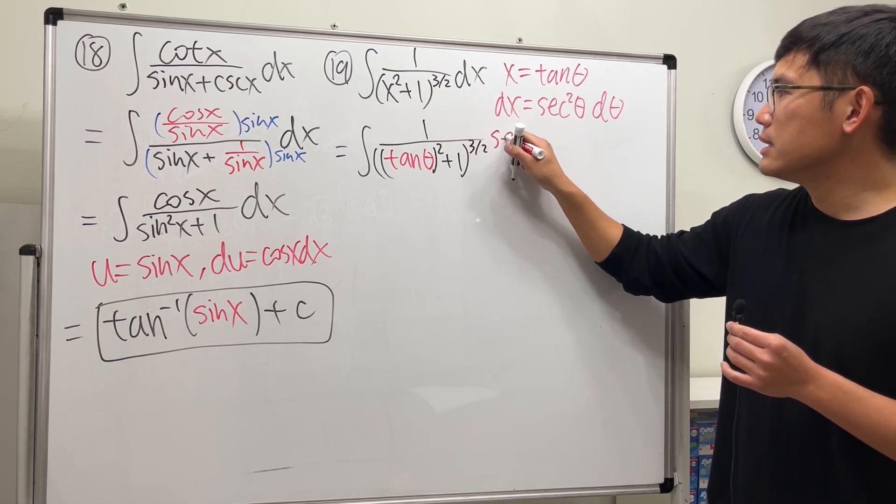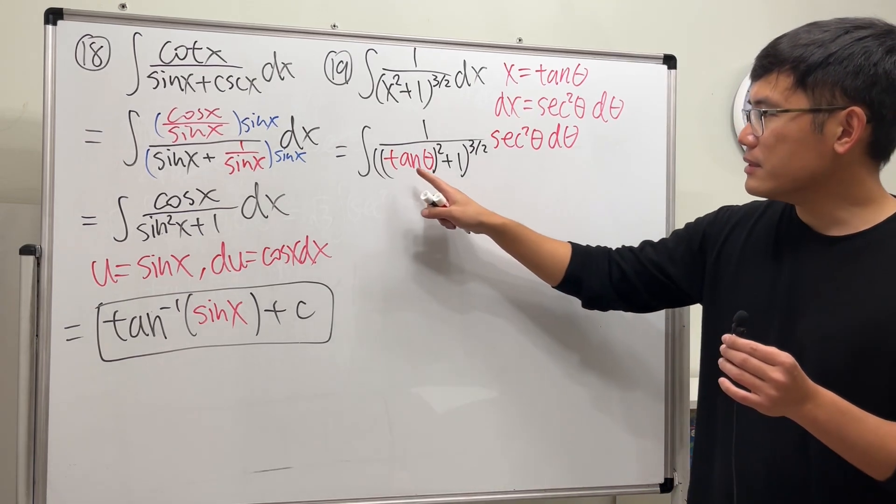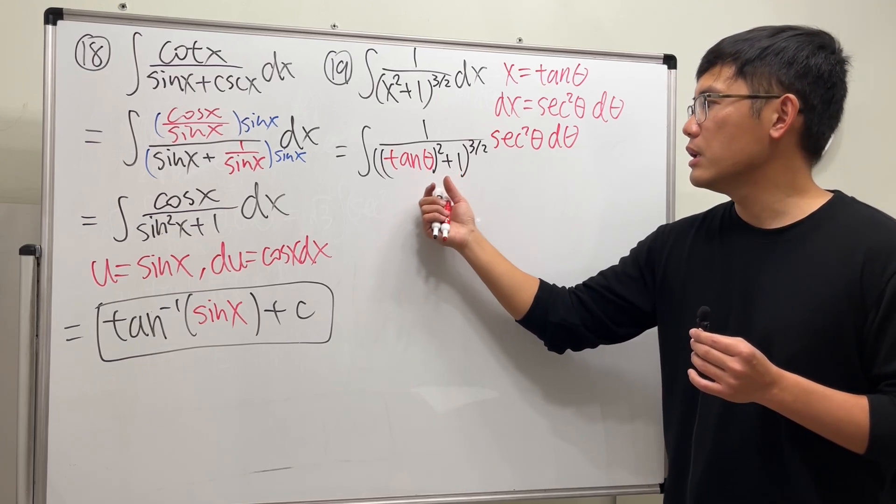Check this out: tangent squared plus 1 is secant squared, and that will cancel out with this.